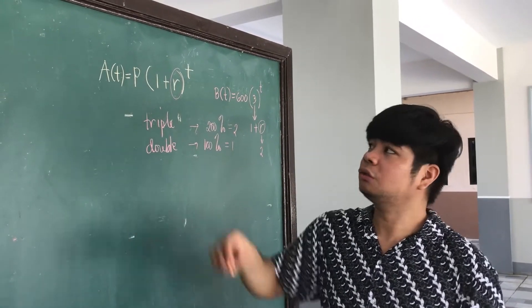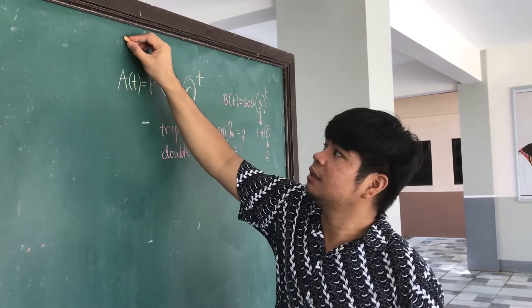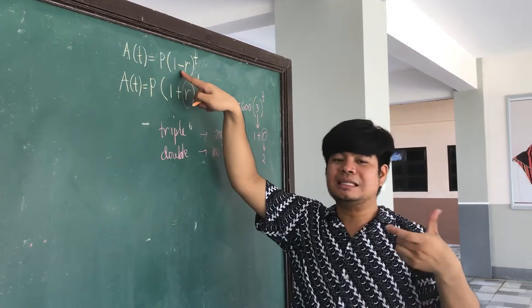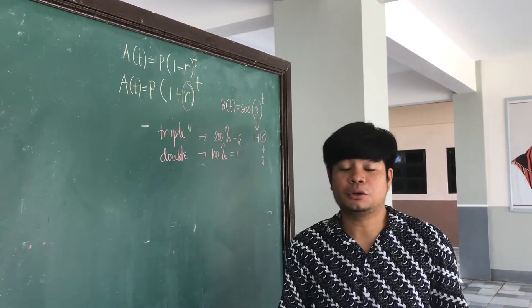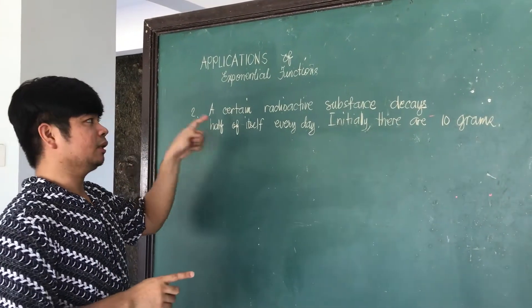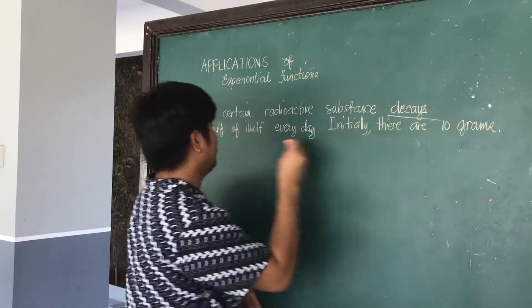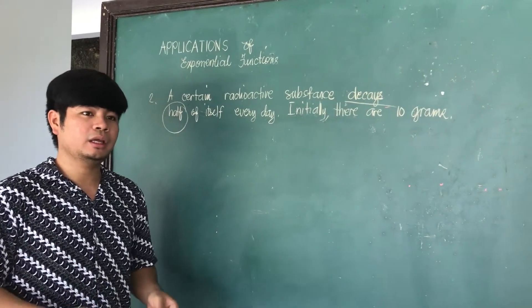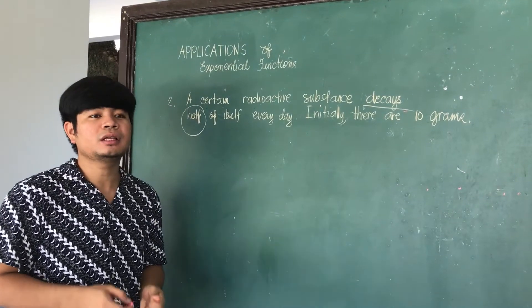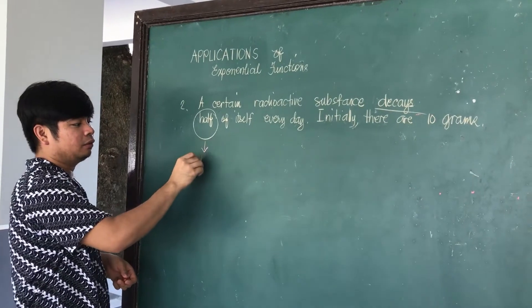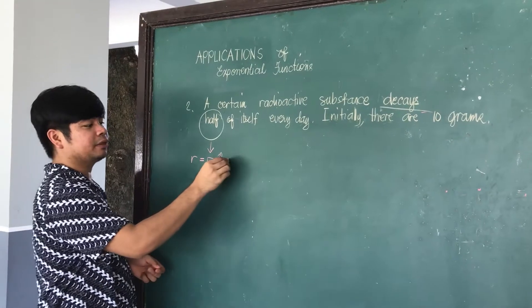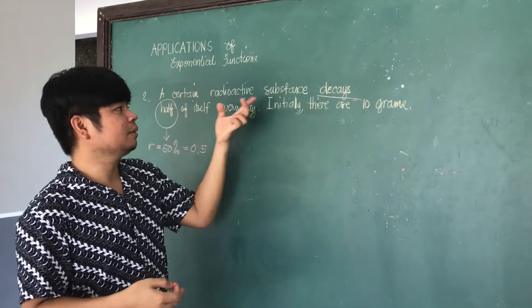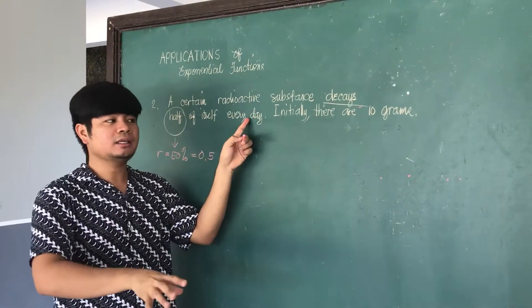We can also talk about decay or decrease. The formula is: amount after time t equals A₀ times (1 minus r) raised to t. Subtraction means decay or decrease; plus means increase or growth. On our second example, a certain radioactive substance decays to half of itself every day. Initially there are 10 grams — this kind of problem applies to health-related laboratory experiments. The term 'half' means a 50% rate. So on the first day, 10 divided by 2 gives 5 grams remaining.